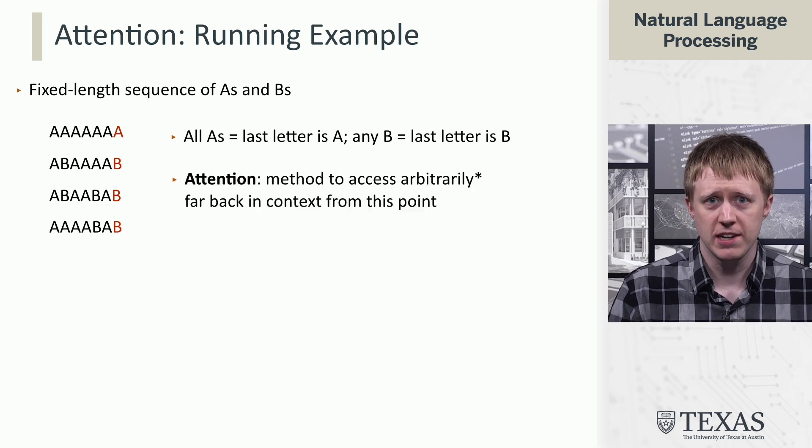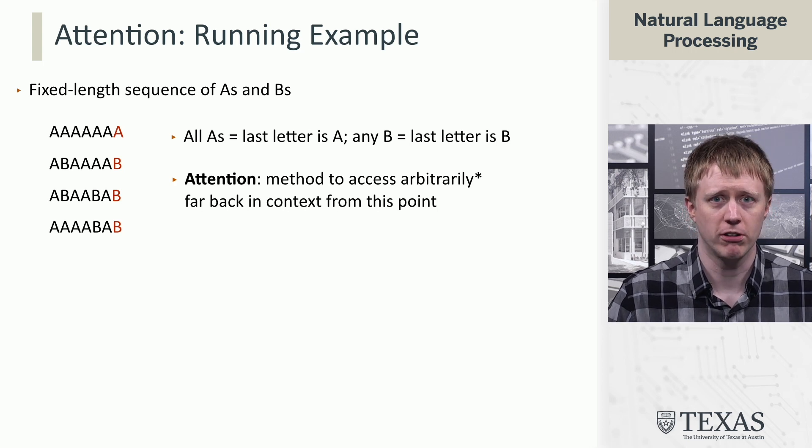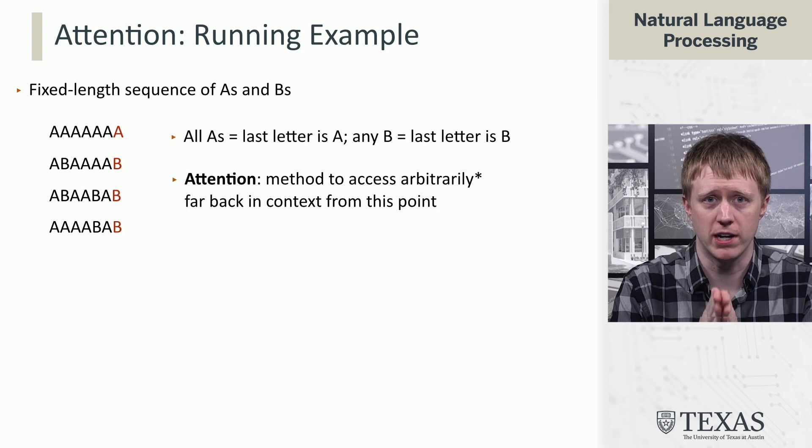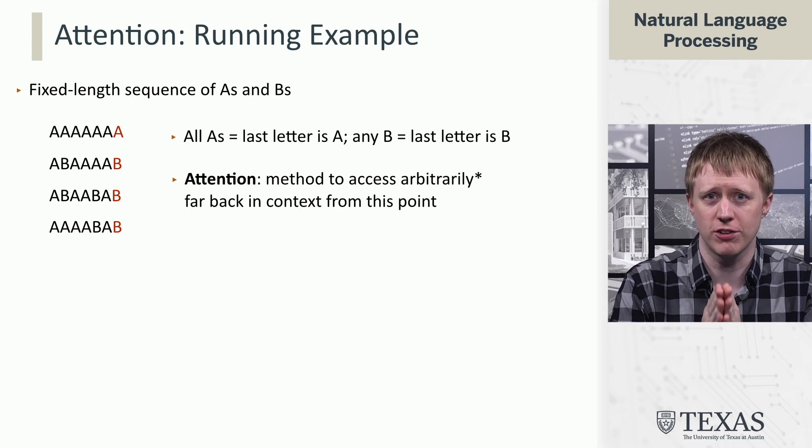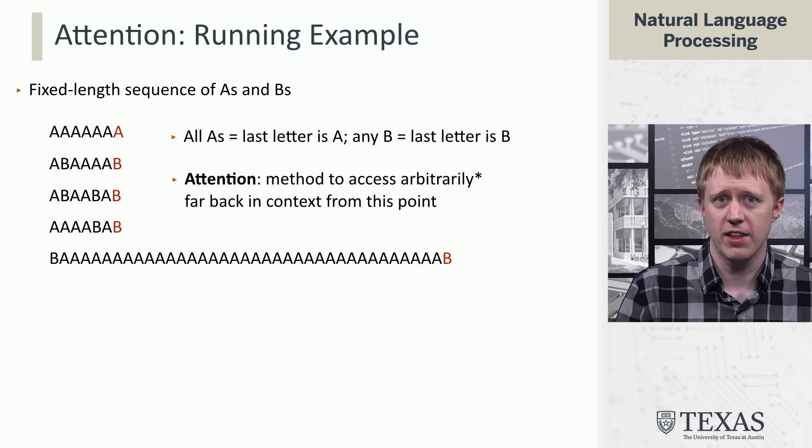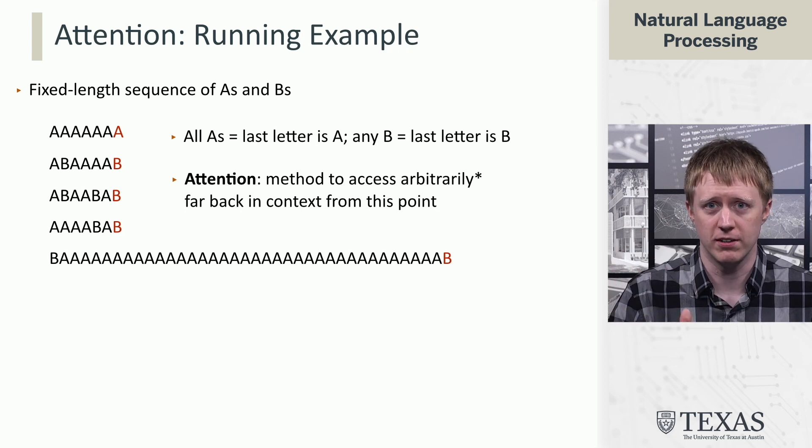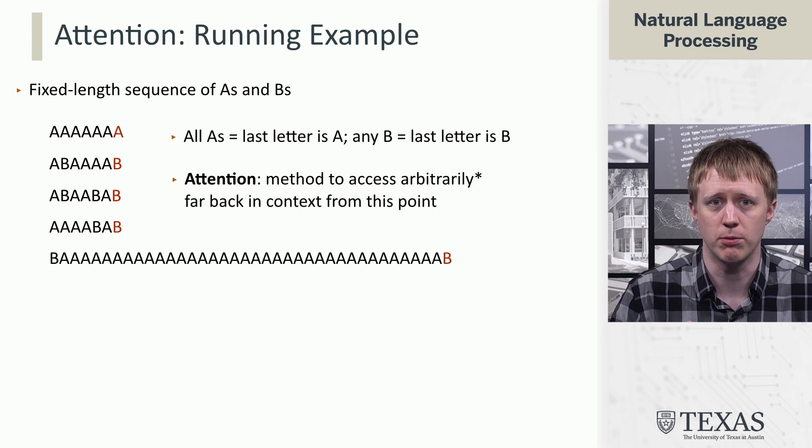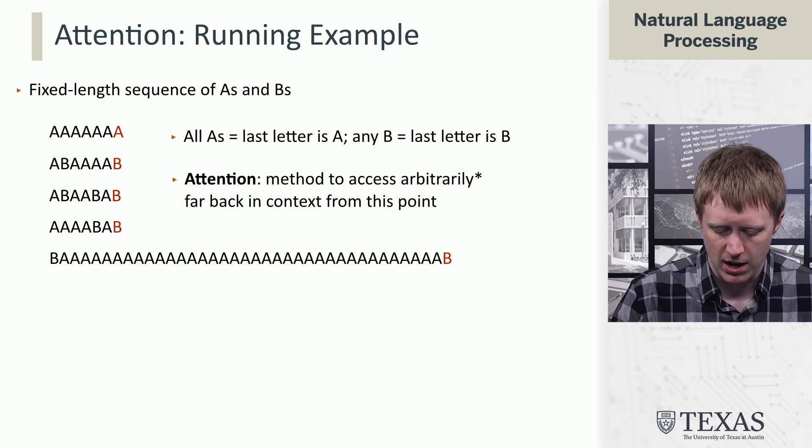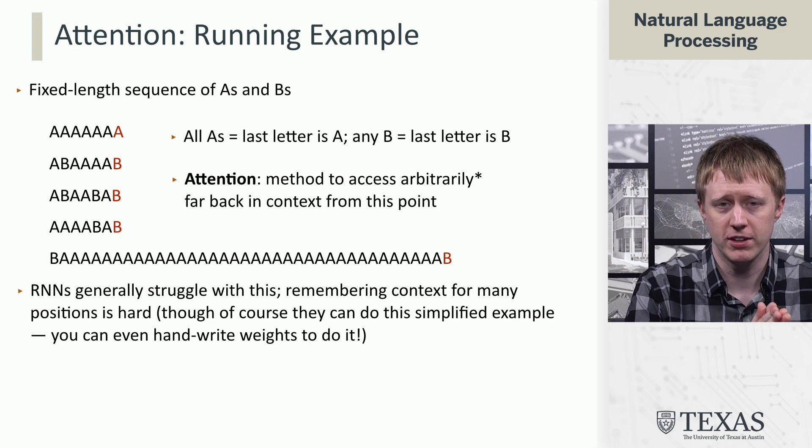So the reason that we need something like attention is because it's going to allow us to go arbitrarily far back in the context from where we are trying to make a prediction, and that's going to help us answer this question of basically, is there a B anywhere? So I know I said they would be fixed length sequences, but just as a thought experiment, suppose we were trying to do language modeling over sequences like this. This is the kind of thing that RNNs sort of struggle with.